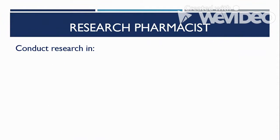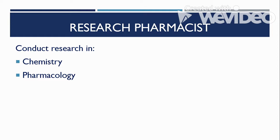Research pharmacists may conduct research in different fields. In Chemistry, they study the composition, structure, properties, and chemical changes of drugs when taken together with other substances. In Pharmacology, they study how drugs interact in living systems and what drug actions occur in the body. In Toxicology, they conduct research regarding the safety and biological effects of drugs, chemicals, and other substances on living organisms, including methods to determine harmful effects and dosages that can cause toxic effects.